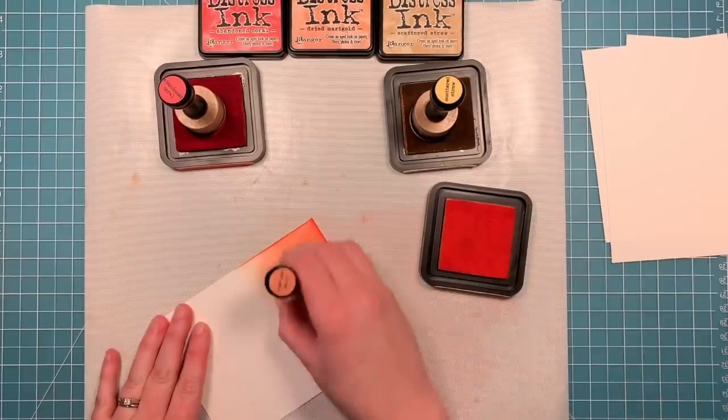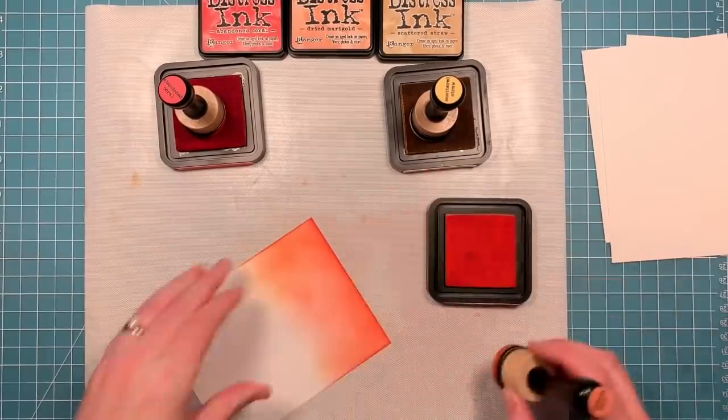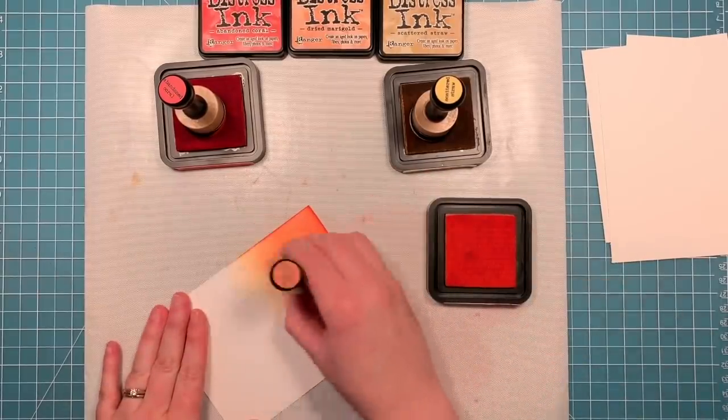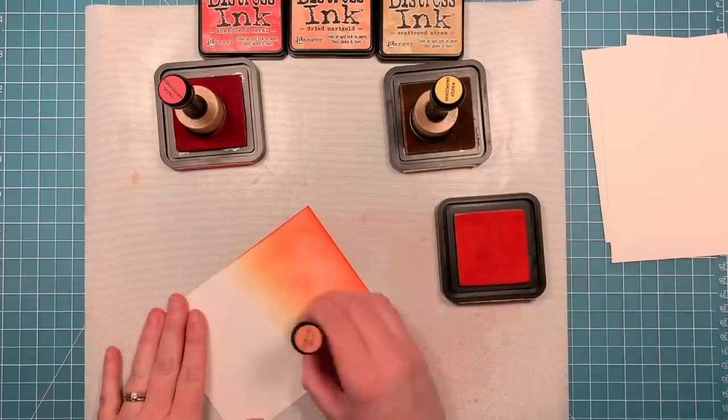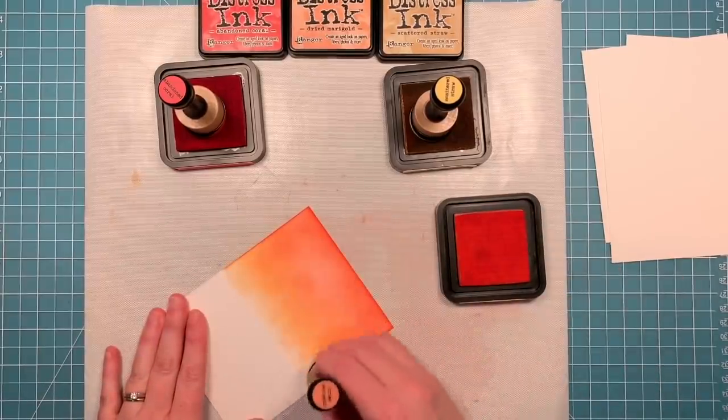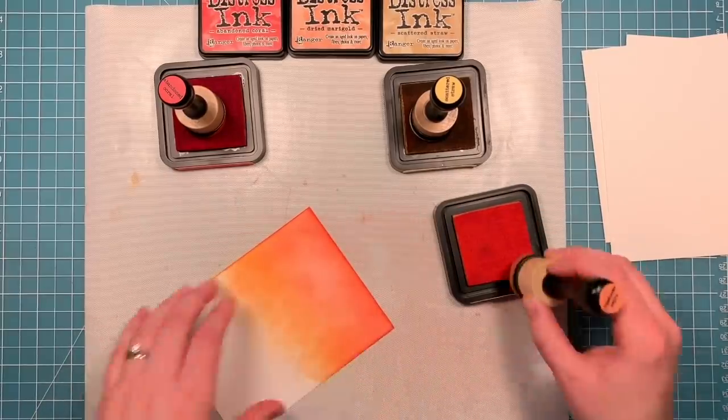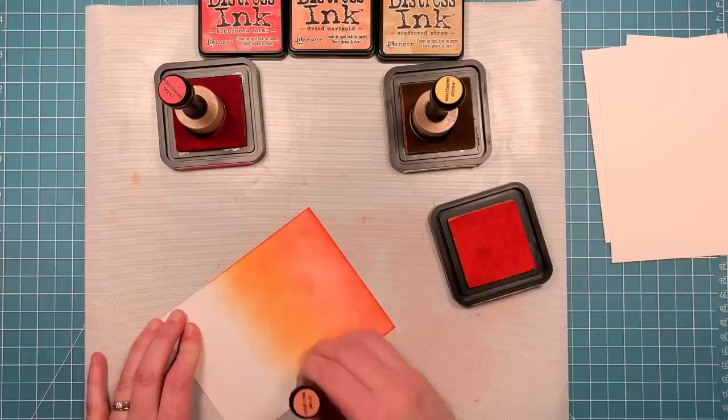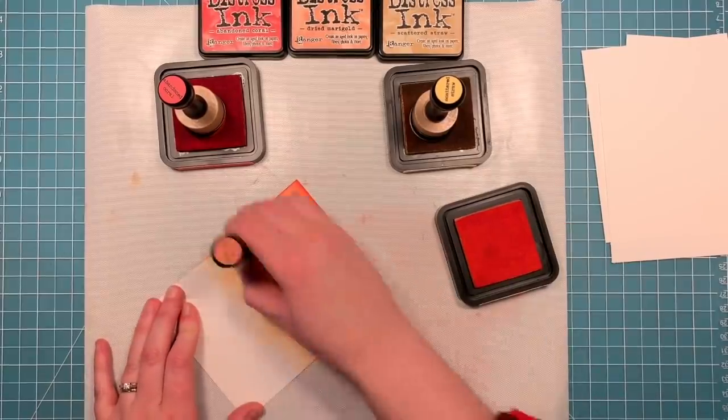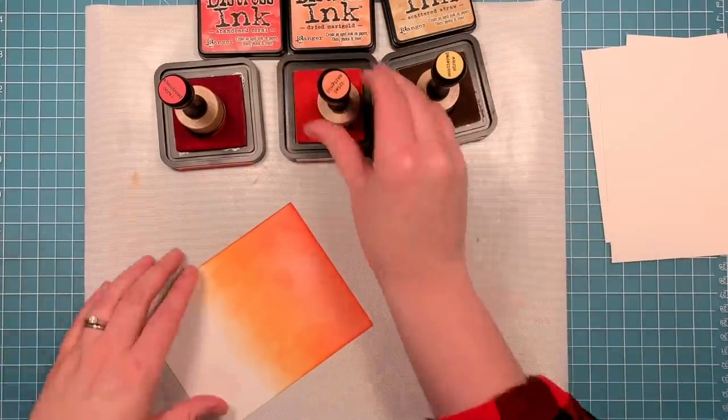Next I'll go in with the dried marigold and I'll blend from the sides and I'll cross over that abandoned coral a little bit so that my colors will blend together. Then I'll always go back to the color that's at the top and blend that line a little bit more. It's just a back and forth kind of game here.